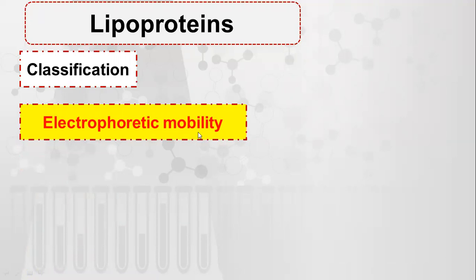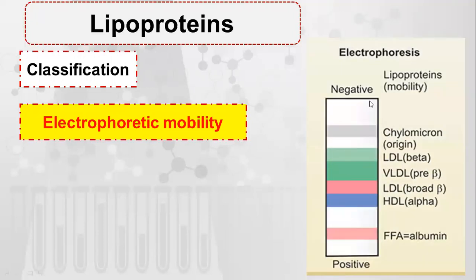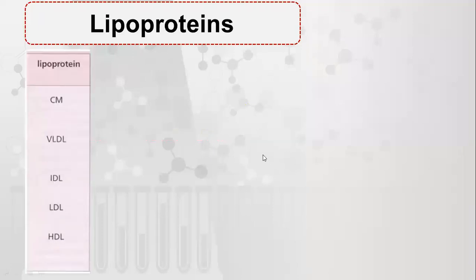The second classification is on the basis of electrophoretic mobility — how much they move when an electric charge is applied. This depends on charge density, or the charge-to-size ratio. Chylomicrons remain at the origin and do not move, while fatty acids and albumin move the most toward the positive part, meaning they are more negatively charged. This is the arrangement based on electrophoretic mobility.